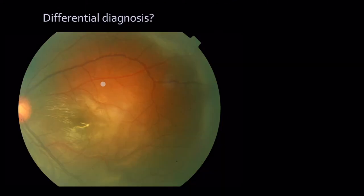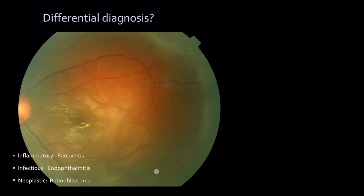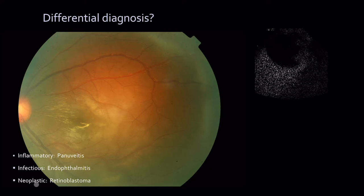When you look at the retina, you can see some whitening, and you must ask yourself: could it be inflammatory? Could it be infectious, or could it be neoplastic? If it's inflammatory, think of pan-uveitis. If it's infectious, think of endophthalmitis. If it's neoplastic, retinoblastoma.